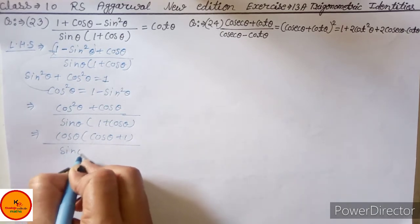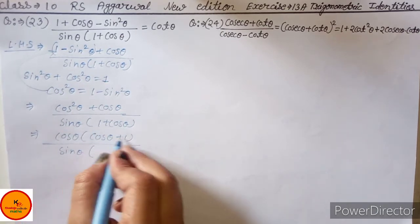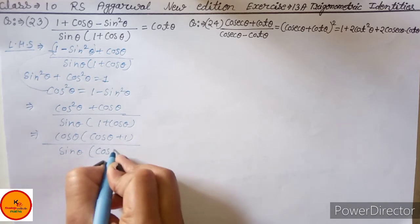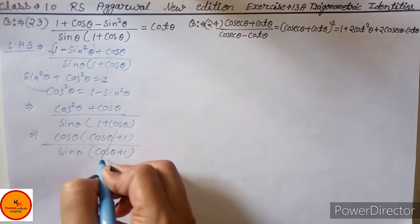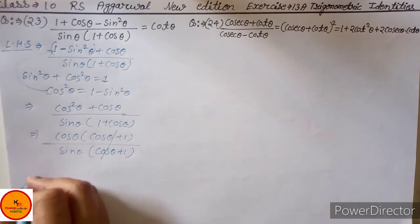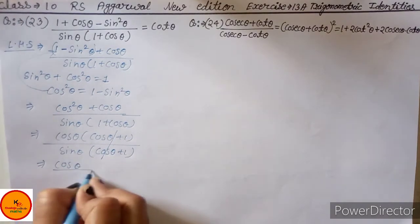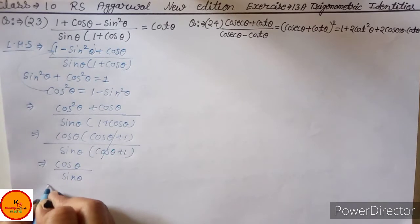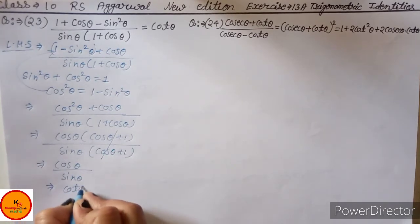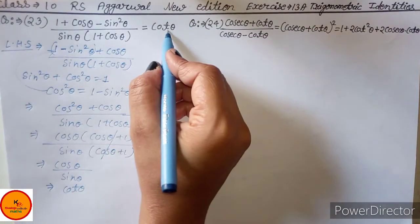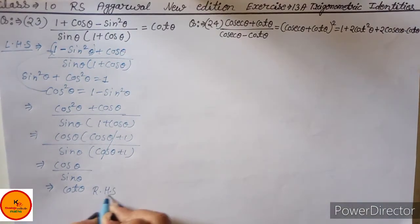Divide by sin theta times (cos theta plus 1). Now (cos theta plus 1) appears in both numerator and denominator — so we cancel it. Then we are left with cos theta upon sin theta. Cos theta upon sin theta is called cot theta. And you can see this is the RHS.